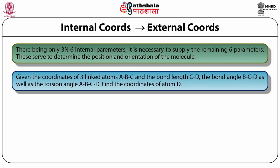Since there are only 3n minus six internal parameters, going from external to internal can always be done with all the required information. But if moving from internal to external, six parameters must be supplied. For a single molecule these six parameters can be arbitrary, but if there is more than one molecule and one must define the position of one with respect to the other, that information must be used to obtain the remaining six parameters. Nevertheless, standard general algorithms always work to convert 3n minus six internal coordinates to the corresponding external coordinates.